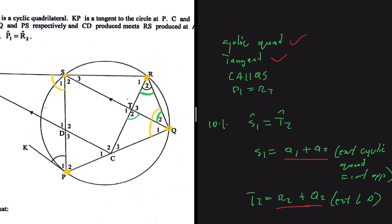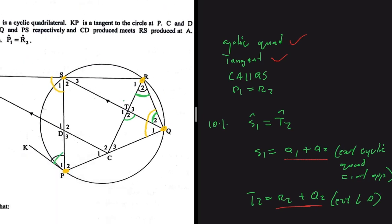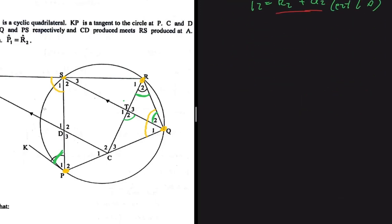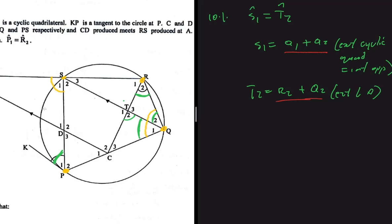From the tangent keyword, we can see immediately that P1 equals Q1, because of the tangent-chord theorem. So let's write that down: P1 equals Q1, by the tangent-chord theorem.